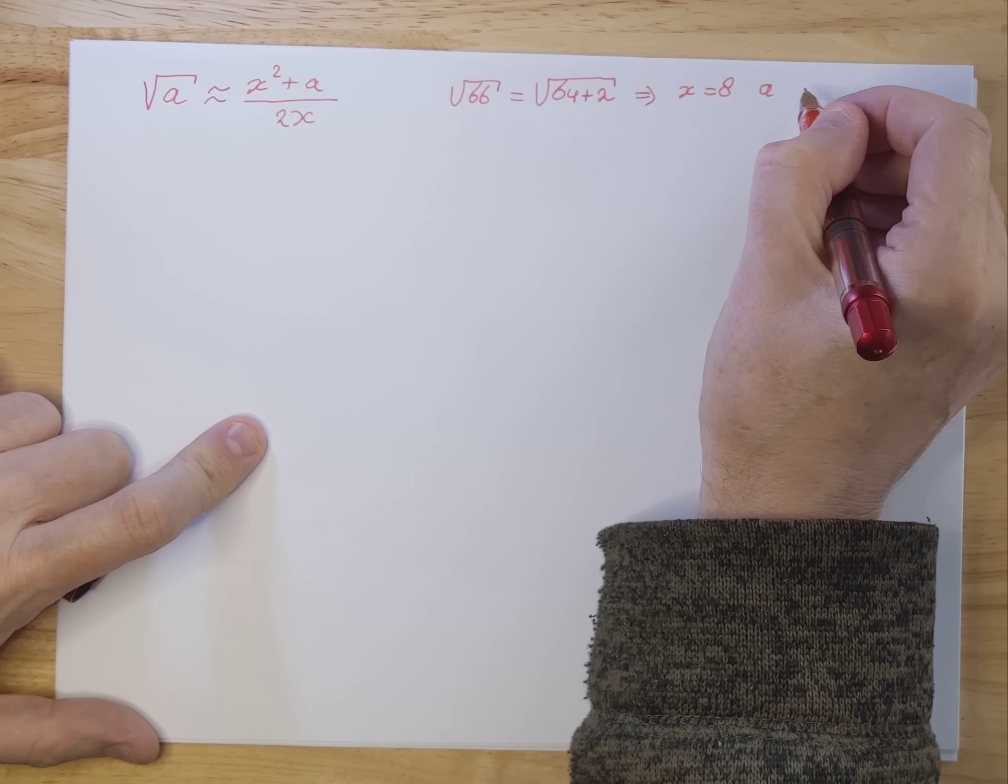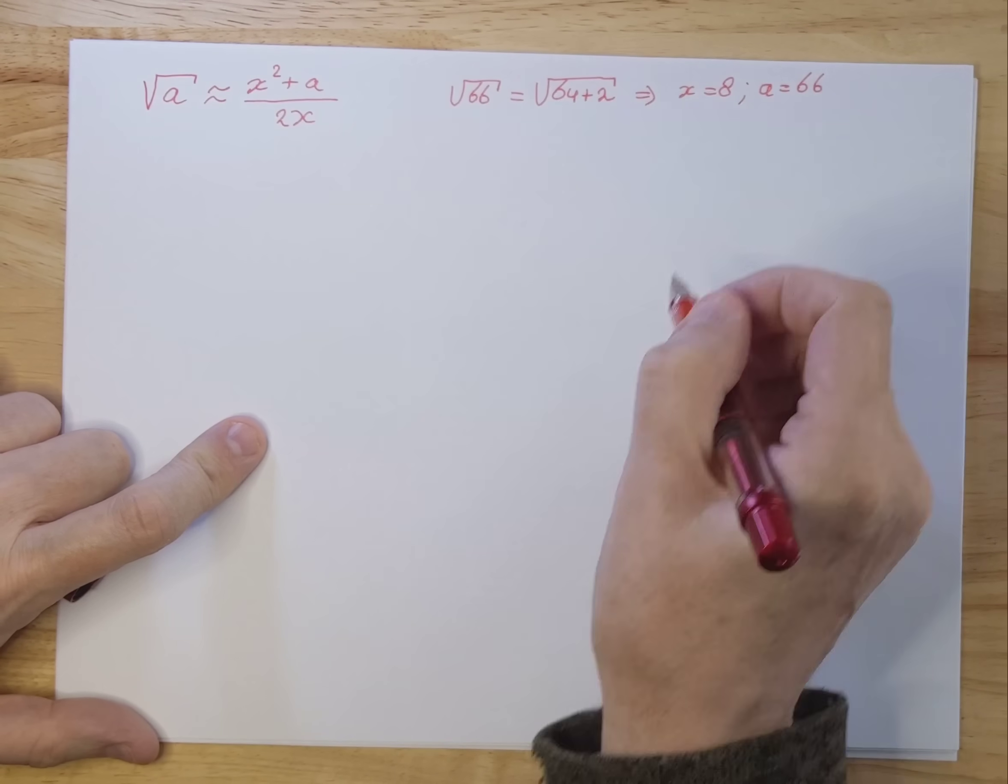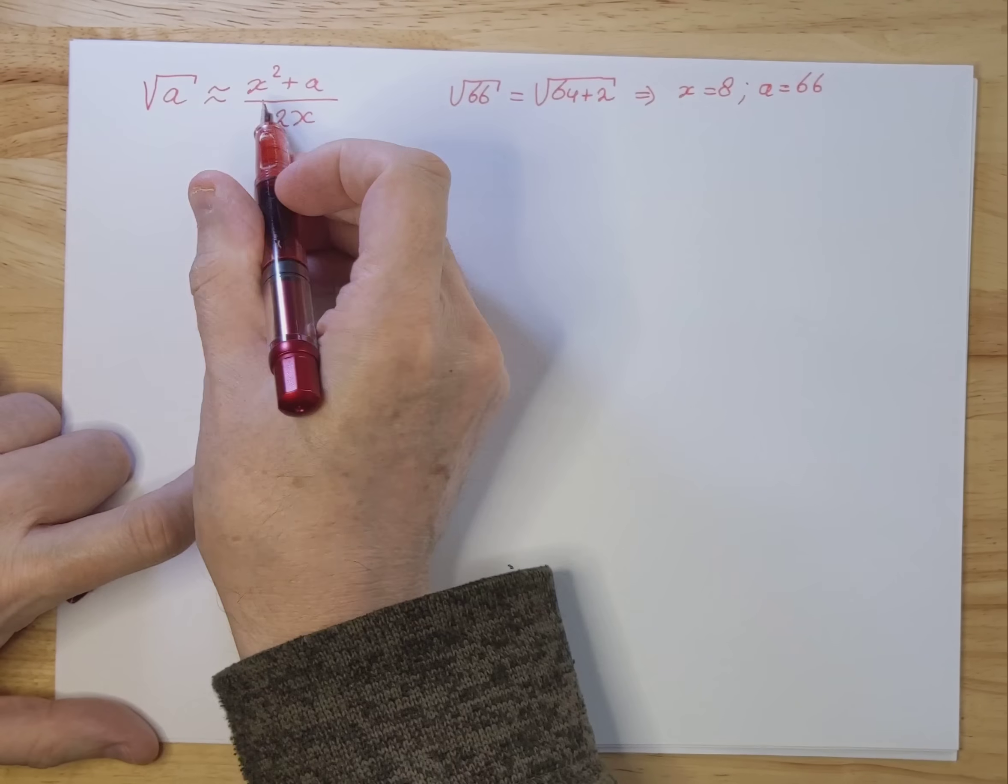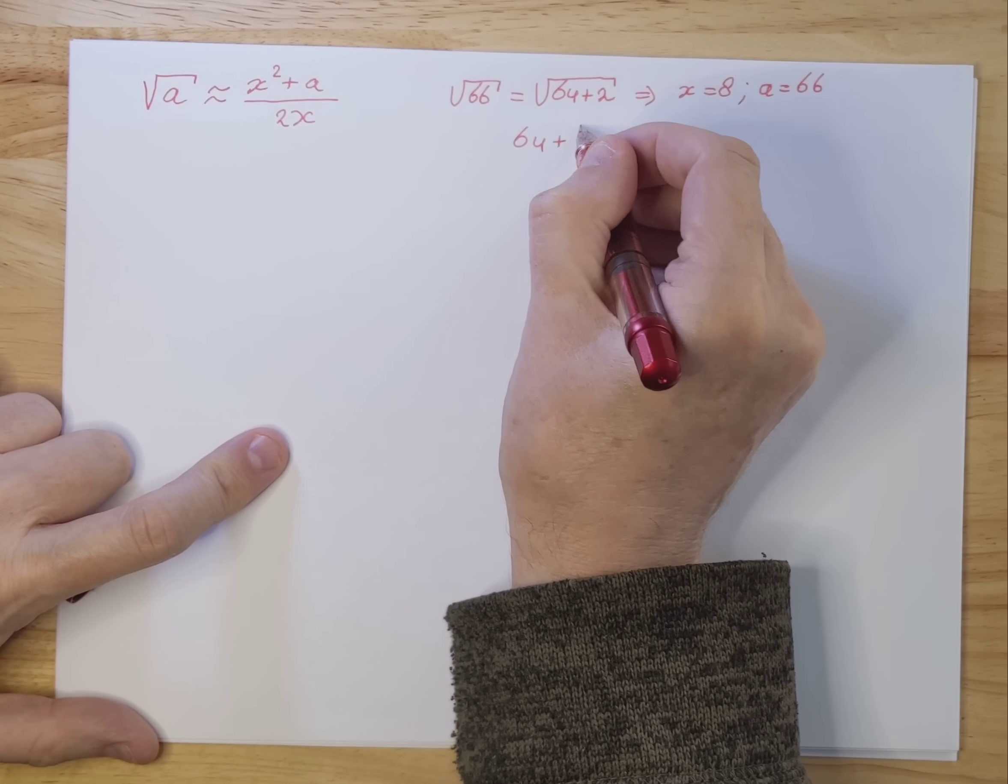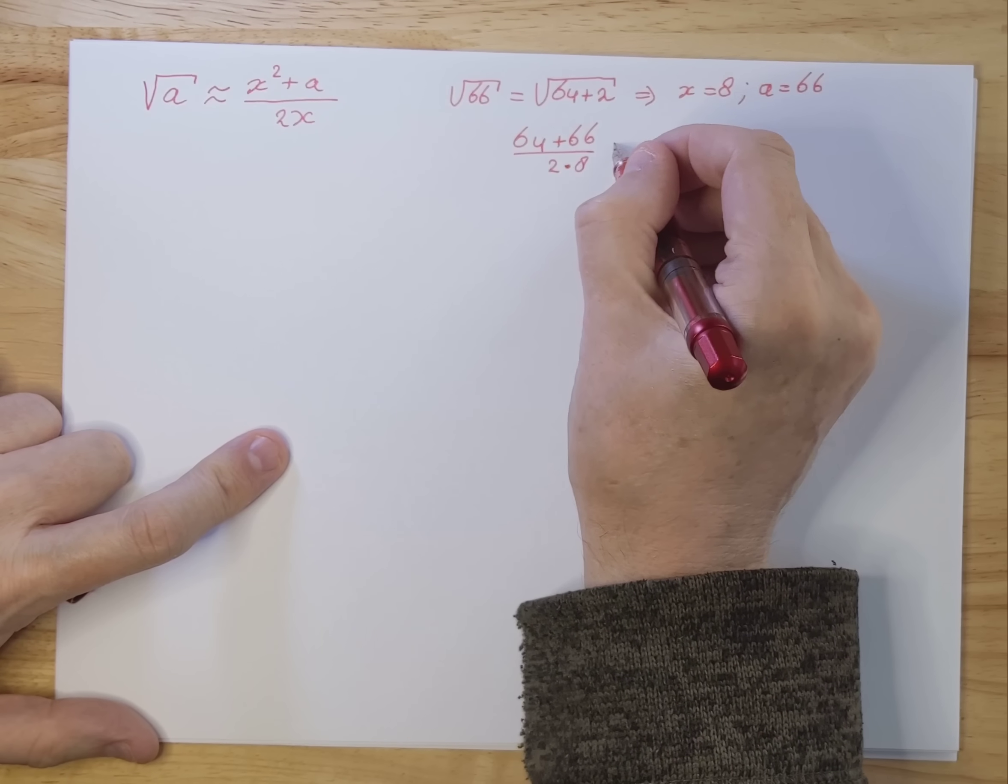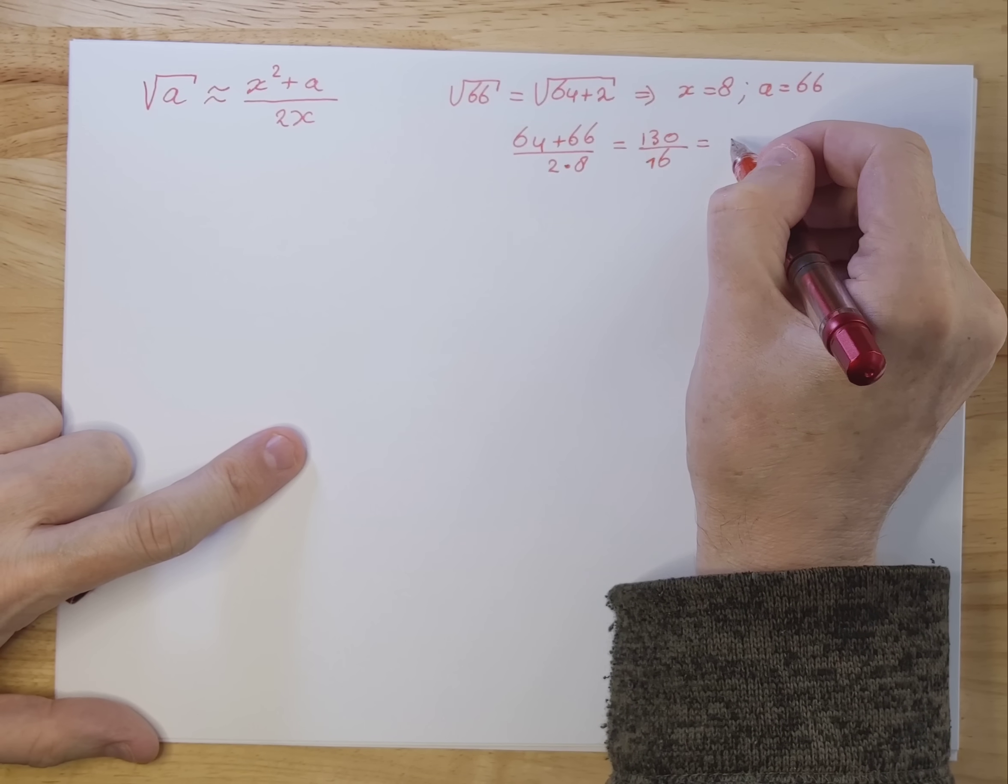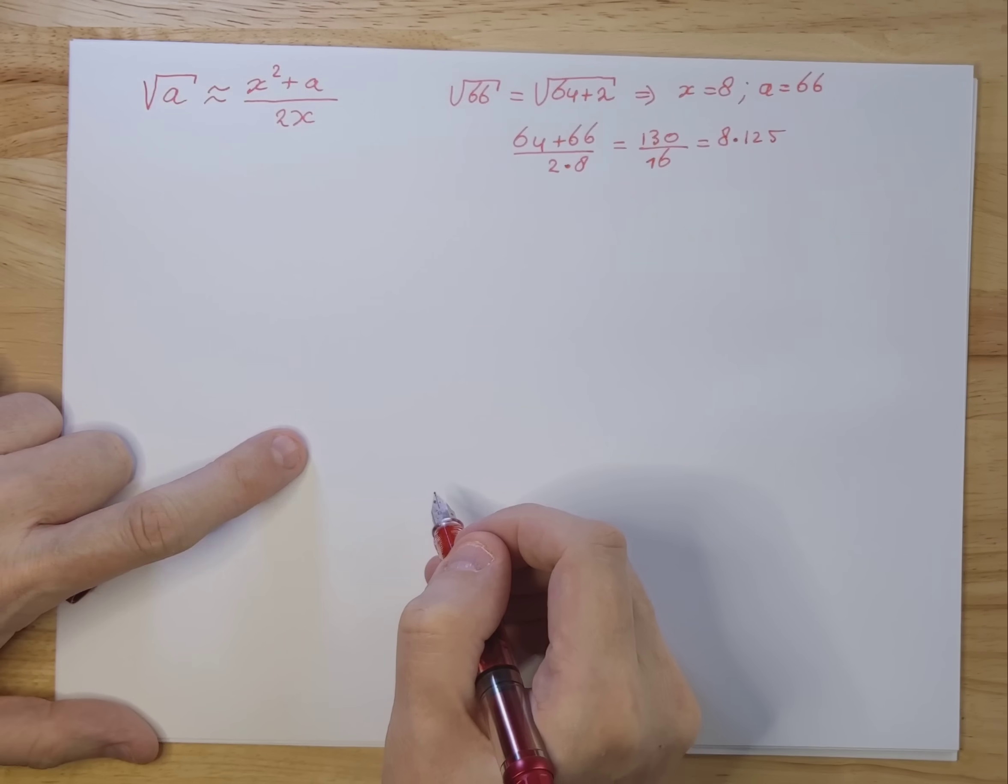A is something we would like to calculate, but that's 66 or the square root thereof rather. So that's 66. Now we have an ability to fill this formula out and we say that's 64 plus 66 divided by 2 times 8. That is 130 divided by 16 and that's 8.125.